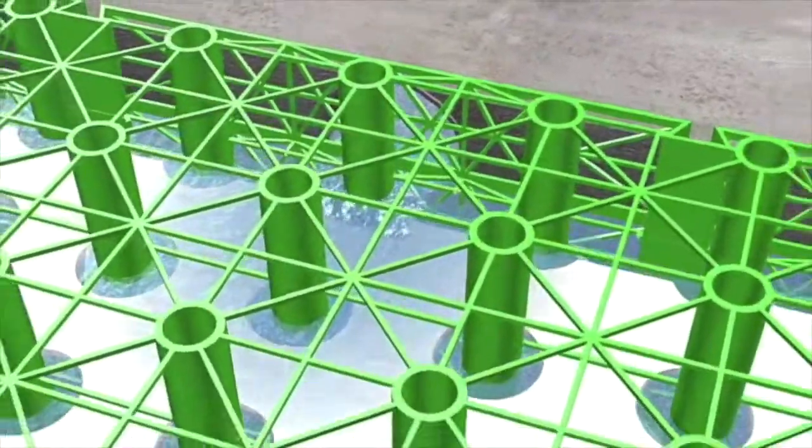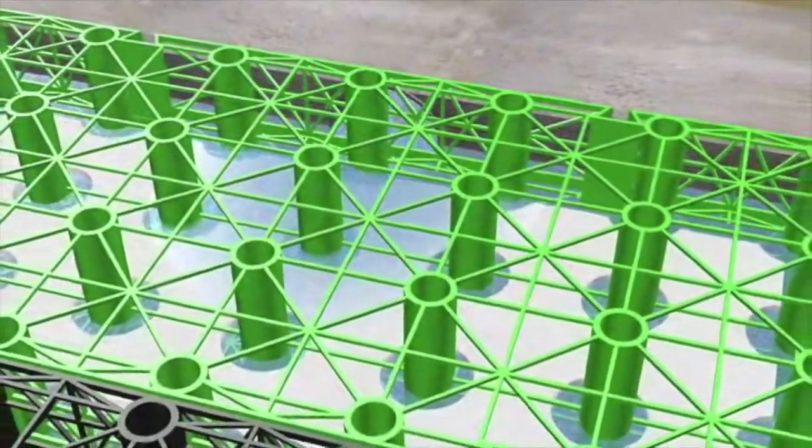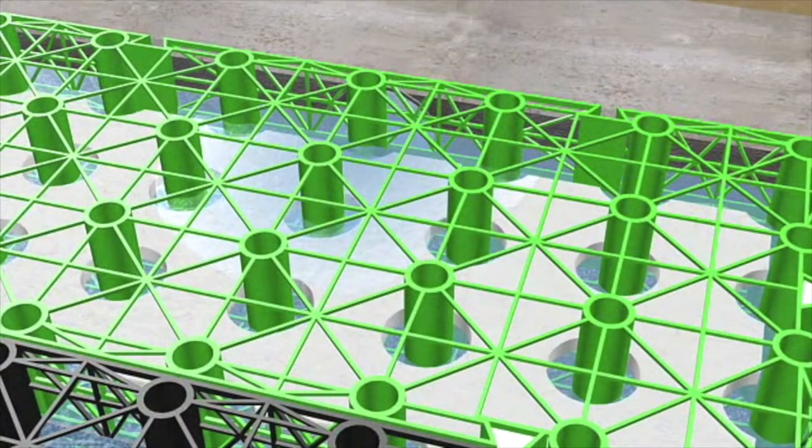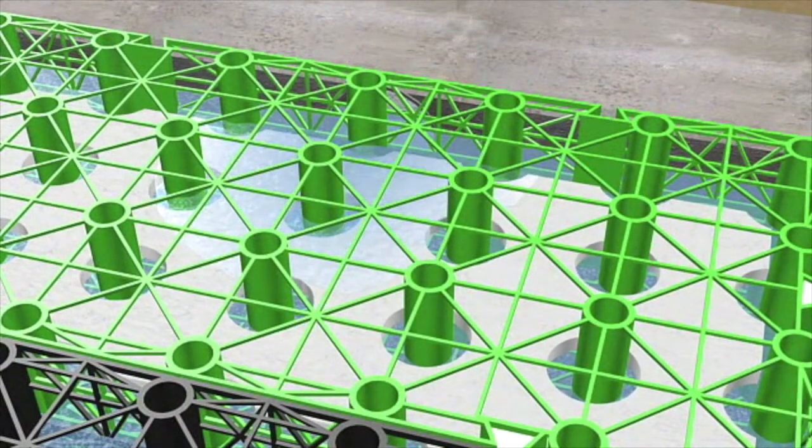These units are similarly constructed to standard perma-void units, but include a unique oil-trapping floating mat.